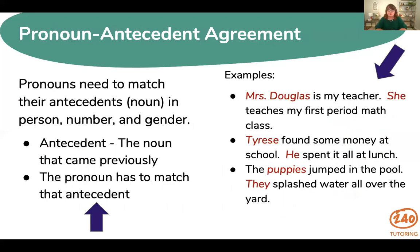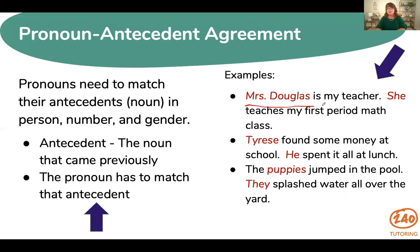Now let's look at pronoun antecedent agreement. This means that when we use a pronoun it matches the noun that was previously used — what we call the antecedent — in person, number, and gender. For example: 'Mrs. Douglas is my teacher. She teaches my first period math class.' Mrs. Douglas is the antecedent and 'she' is the pronoun that matches in person, number, and gender. Another example: 'Tyrese found some money at school. He spent it all on lunch.' The pronoun 'he' matches the antecedent Tyrese in person, number, and gender.